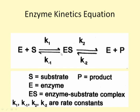The ES complex is considered the central complex, but in reality there may be other enzyme-bound complexes in the reaction pathway. One can easily imagine there has to be an EP complex, because the conversion of substrate to product takes place on the surface of the enzyme. However, all such complexes are considered as the ES complex in the derivation of the Michaelis-Menten equation.